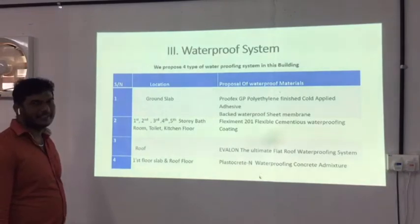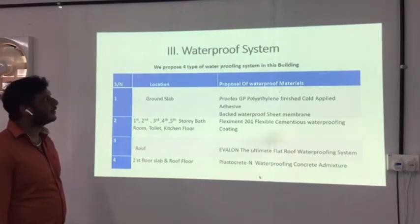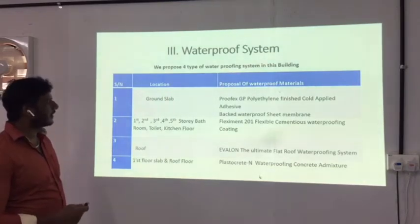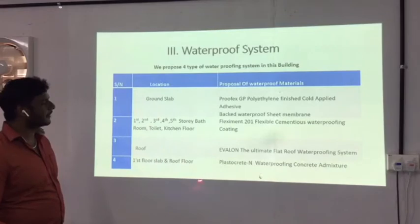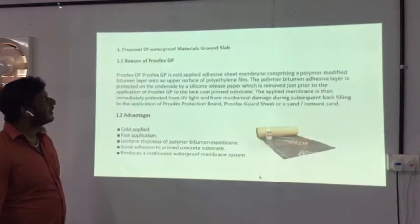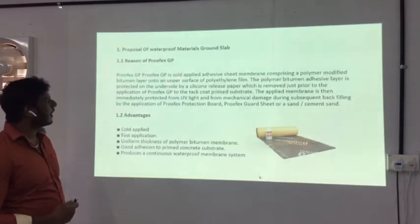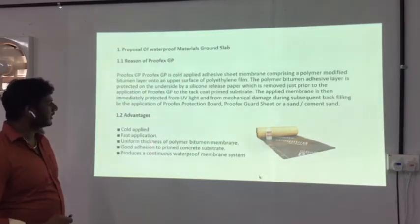My name is Picheng Manikandash. My seat number is 14. Today I'm going to present the waterproofing system. We propose four types of waterproofing in this building. Number one, we will provide GP material — we are going to use it for the ground floor slab and the basement wall. These are the advantages.